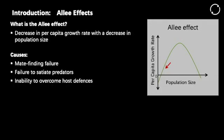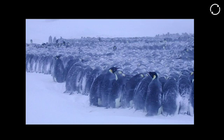Another cause is the inability to overcome host defences. It's well known that certain bark beetle species need to attack their host plant en masse to be able to overcome those defences. Reduced thermoregulation is also a cause — some animals live in a group and can change the temperature of their environment. For example, when penguins huddle together to keep warm, when that group is too small, they won't be sufficiently warm and will eventually die out.